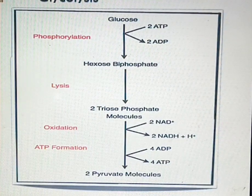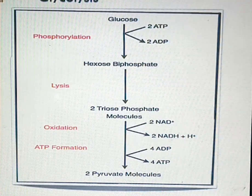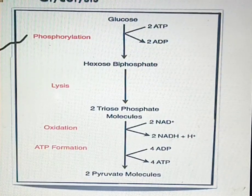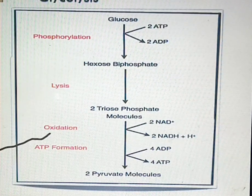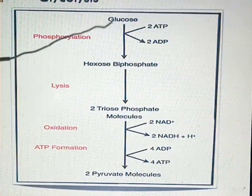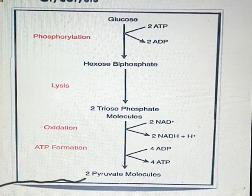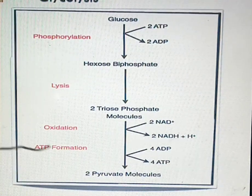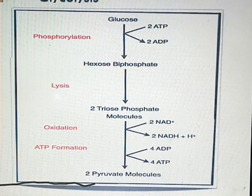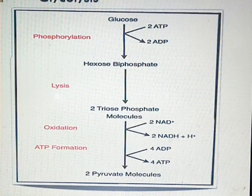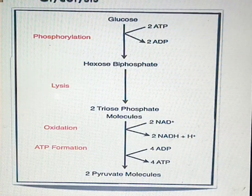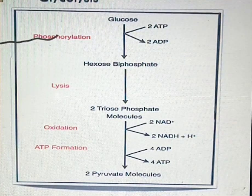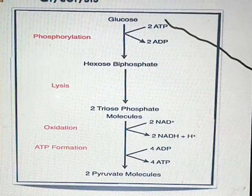Glycolysis takes place in the cytoplasm. For WAEC, GCE, or Cambridge IGCSE, glycolysis has three main steps: phosphorylation, lysis, and oxidation. Glycolysis means glucose, a six-carbon compound, is converted to pyruvate, a three-carbon compound. One molecule of glucose gives you two molecules of pyruvate. In phosphorylation, ATP is added to the glucose to activate it.